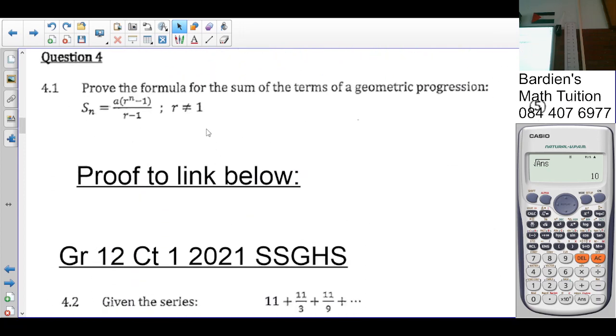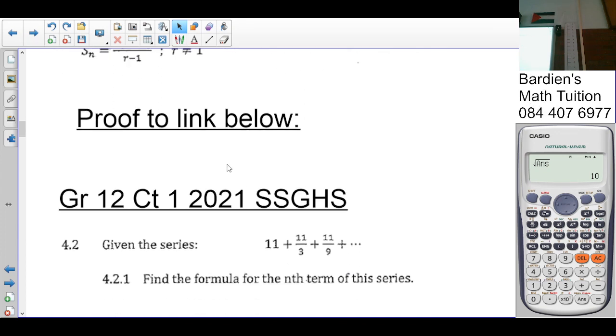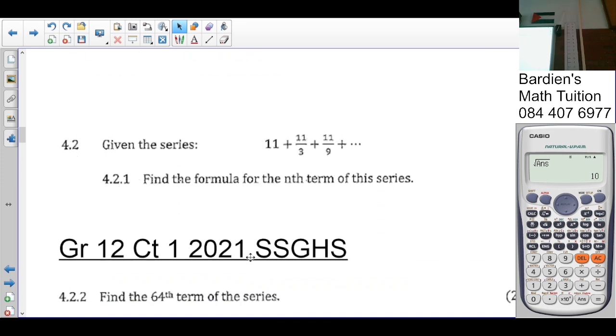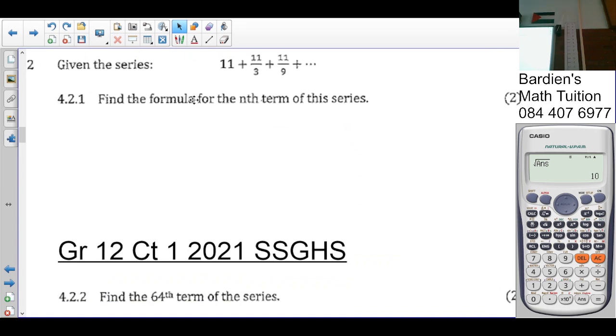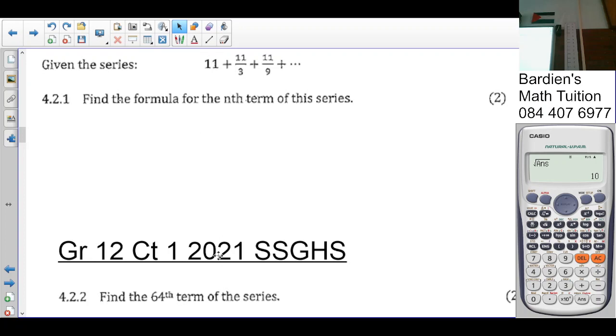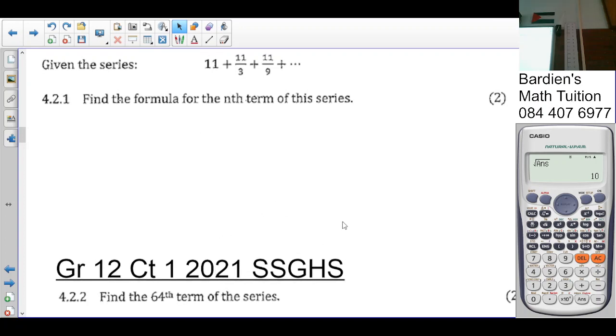People, the proof of the formula for the sum of terms of the geometric progression, you'll find that in the description box below. So that brings us now to question 4.2, which is our sequence and series section. The question says, find the formula for the nth term of the series. You're given the series 11 plus 11 over 3 plus 11 over 9.